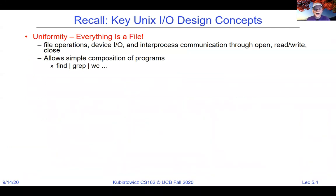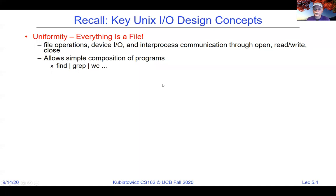In Unix, pretty much everything's a file. You can talk to files with read and write, talk to devices, and do inter-process communication — which we're going to show today. That interface is pretty constant, and among other things it allows simple composition: find, piping into grep, piping into word count, et cetera — that you're getting used to with your programming at user level, and you're going to actually implement when we get around to project two.